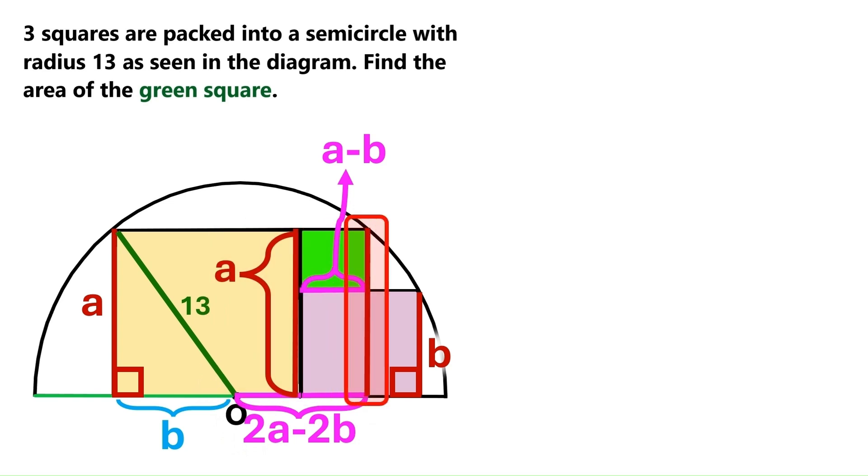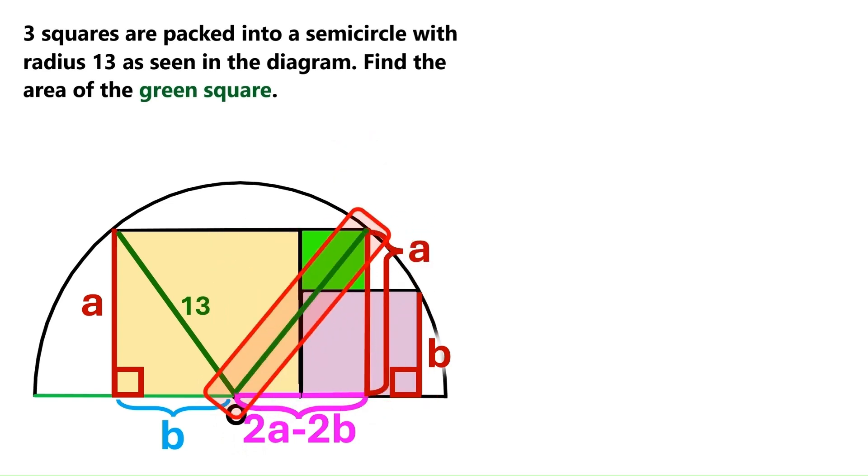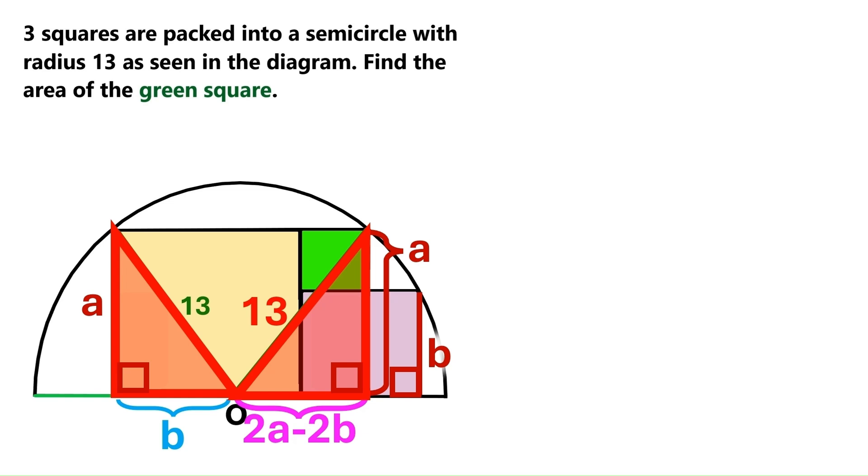Now let's project this side a to here. And this line we draw here is the radius of the semicircle, so it's 13. And we've got a right triangle here. And we already had this other right triangle over here. And their hypotenuses are identical.